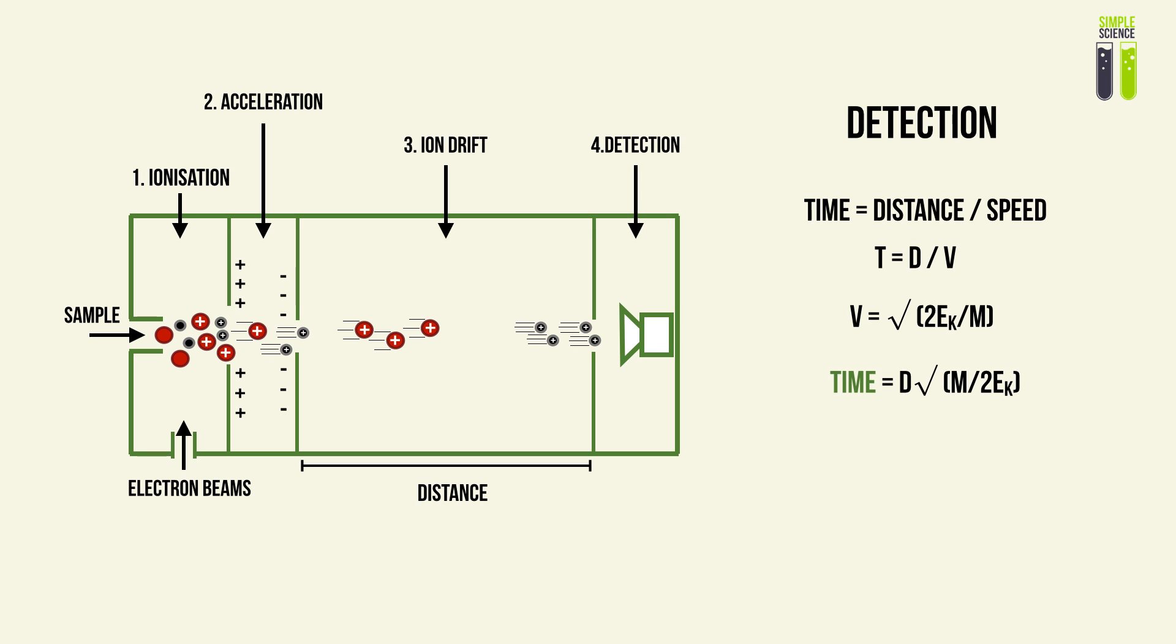Time is therefore equal to the distance multiplied by the square root of mass over two times kinetic energy: t = d√(m/2E_k). From this we can rearrange to find mass. From known values of kinetic energy, which is electric potential energy lost that we can calculate from the acceleration stage, the time measured by the detector, and the distance, which is a controlled variable, we can find the mass and therefore the mass-over-charge ratio.